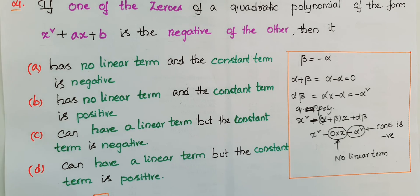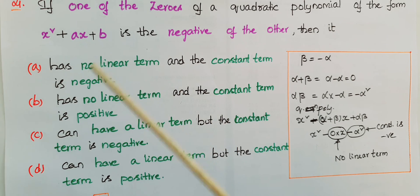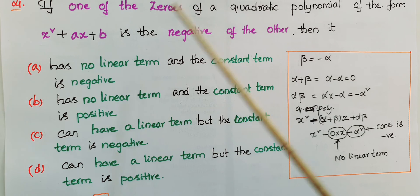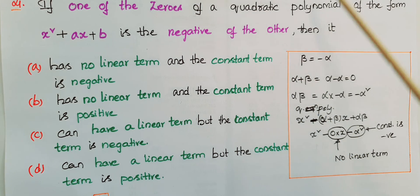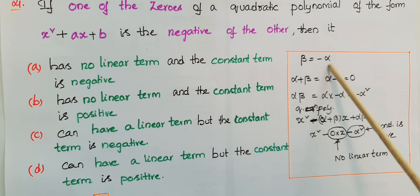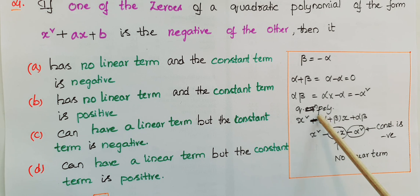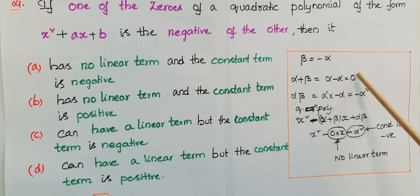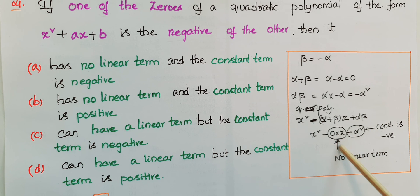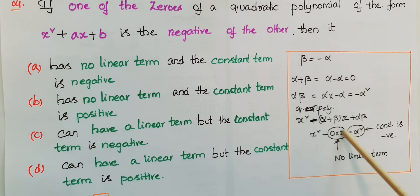Fourth question: if one of the zeros of a quadratic polynomial x² + ax + b is the negative of the other, then — options are given. Let alpha and beta be the zeros, with beta = −alpha. Then alpha + beta = alpha + (−alpha) = 0, and alpha·beta = alpha × (−alpha) = −alpha². Writing the polynomial as x² − (alpha + beta)x + alpha·beta gives x² − 0·x + (−alpha²), so there is no linear term.